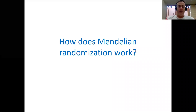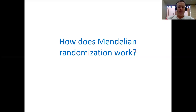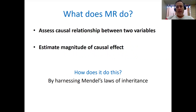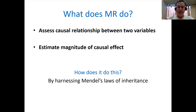Let's talk about how Mendelian randomization works. Basically, we can use Mendelian randomization to do two things. The first is to assess whether there's a causal relationship between two variables. Second, if there is a causal relationship between those two variables, then we can estimate the magnitude of that causal effect.